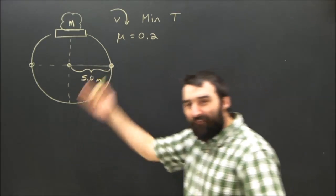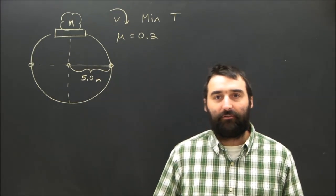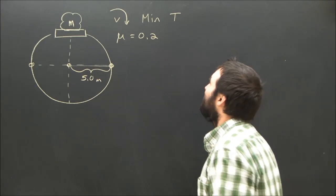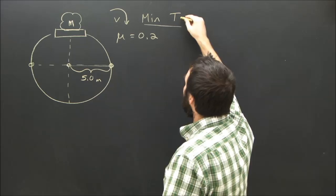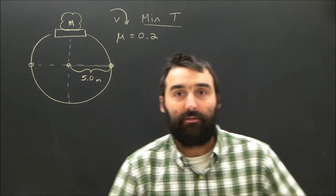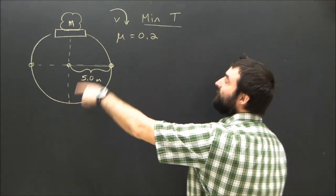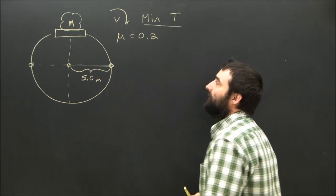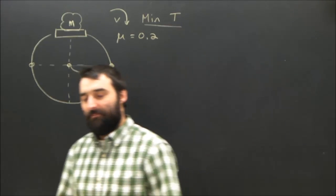And the question is, how fast can I spin this Ferris wheel before the rock goes flying off? But what I'm actually asking you is what is the minimum time period? What is the minimum period, capital T for period? If the Ferris wheel goes faster and faster, the time it takes to do a rotation will get smaller and smaller. So what I'm asking you this time is what's the minimum period?